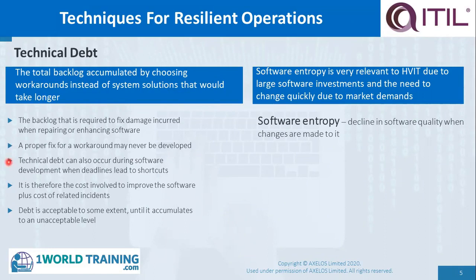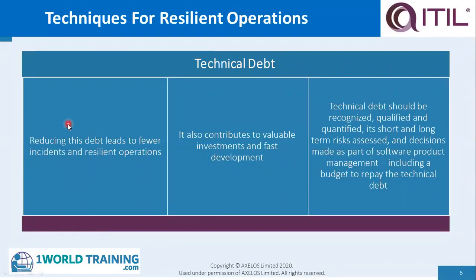Technical debt can also occur during software development when deadlines lead to shortcuts. It is therefore the cost involved to improve the software plus the cost of related incidents. Debt is acceptable to some extent until it accumulates to an unacceptable level, which means that technical debt should be removed from time to time. Some organizations do continuous technical debt removal; others do it at certain points in time, such as quarterly. Software entropy — the decline in software quality when changes are made — is very relevant to HVIT due to large software investments and the need to change quickly due to market demands. Reducing technical debt leads to fewer incidents and resilient operations, and also contributes to valuable investments and fast development. Technical debt should be recognized, qualified, and quantified, with short and long-term risks assessed and decisions made as part of software product management, including a budget to repay the debt.